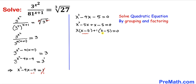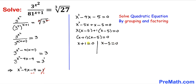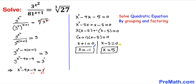Now we can see x minus 5 is in common. Therefore we got x plus 1 times x minus 5 equal to 0. Separating them: x plus 1 equals 0 gives x equal to negative 1, and x minus 5 equals 0 gives x equal to positive 5. If we plug both values into the original equation, the left-hand side is indeed equal to the right-hand side. Therefore x equals negative 1 and x equals positive 5 are our valid solutions.